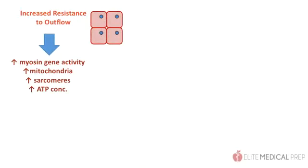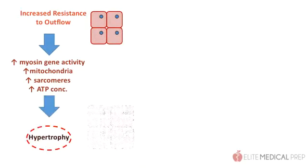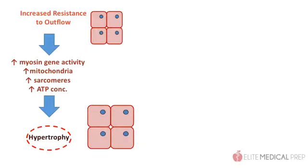So to summarize, increased resistance to outflow leads to hyperplasia of cell contents and hypertrophy of the cardiac myocytes, so they can generate more pressure with each systole.